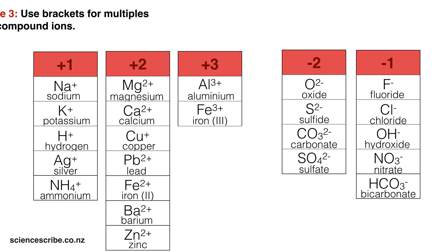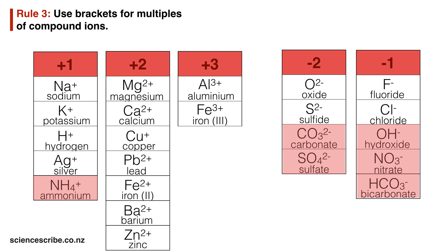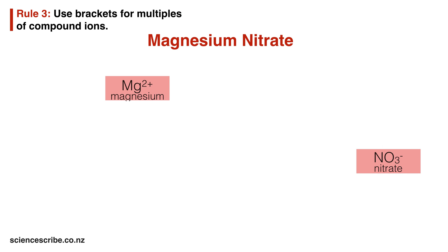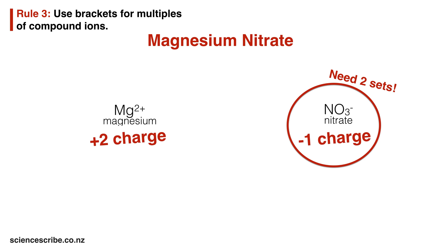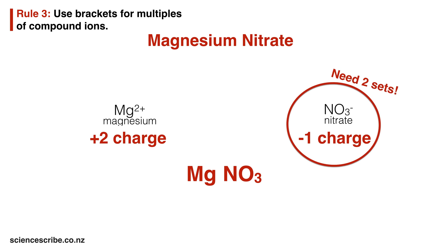The final rule is that if I need multiple sets of a compound ion, I need to use brackets. Compound ions are ions which have more than one different type of element. Let's look at magnesium nitrate as an example. Magnesium has a plus two charge and nitrate has minus one, so from rule two you need two sets of nitrate to balance the charges. When writing the formula, I write Mg for magnesium and NO3 for nitrate. I need two sets of nitrate, shown with a subscript 2, but since nitrate is a compound ion I must use brackets around the entire nitrate group, giving Mg(NO3)2.